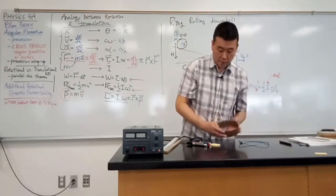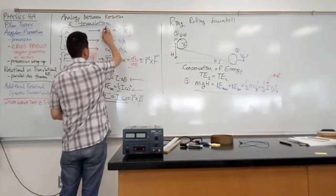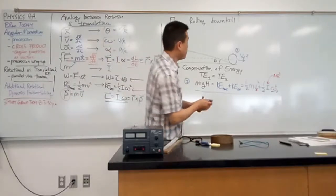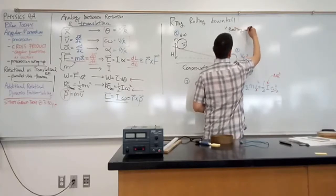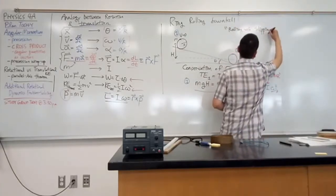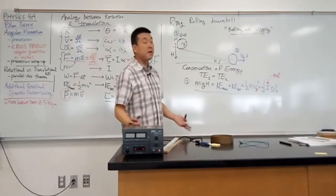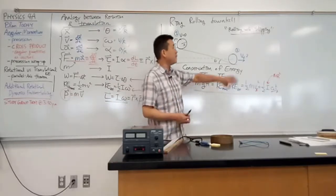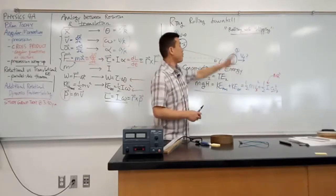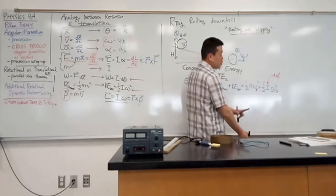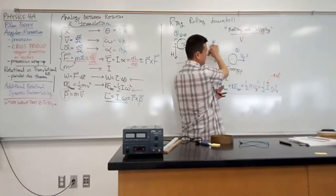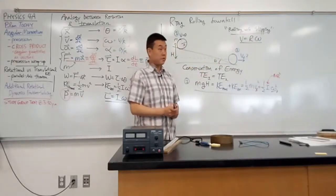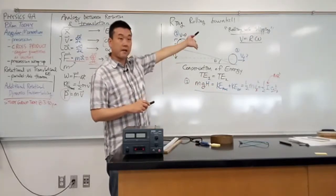We call this the rolling without slipping condition. Objects can slide rather than roll without slipping — some multiple choice questions on Tuesday relied on this. When something is sliding, it doesn't rotate. This condition constrains the two motions together: the velocity at which it's moving, when rolling without slipping, is equal to the radius times the angular velocity. That is the rolling without slipping condition.